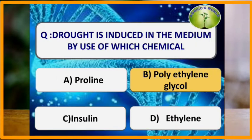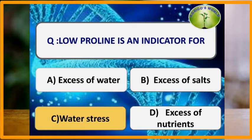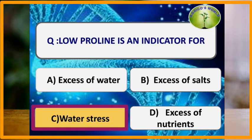Drought is induced in the medium by use of which chemical? Polyethylene glycol (PEG) is the chemical used to induce drought in the medium. Low proline is an indicator for water stress conditions.